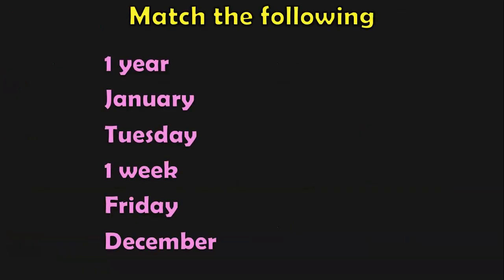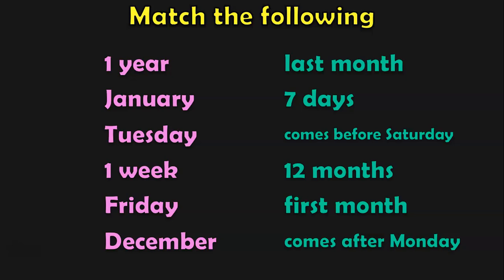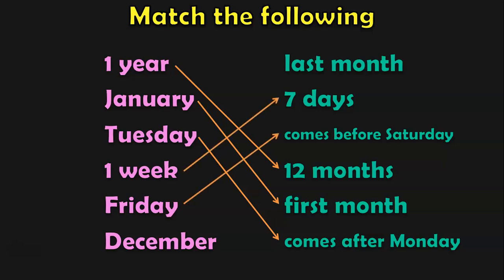Match the following. On the left side we have: one year, January, Tuesday, one week, Friday, and December. On the right side, search for the matching topic. One year is 12 months. January is the first month. Tuesday comes after Monday. One week is seven days. Friday comes before Saturday. And December is the last month.